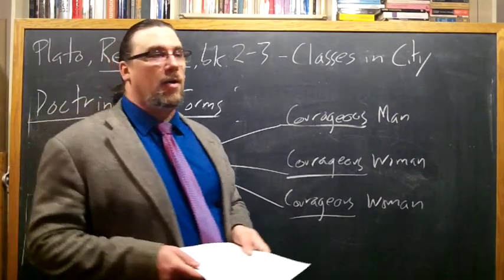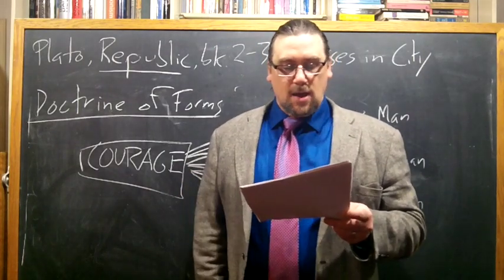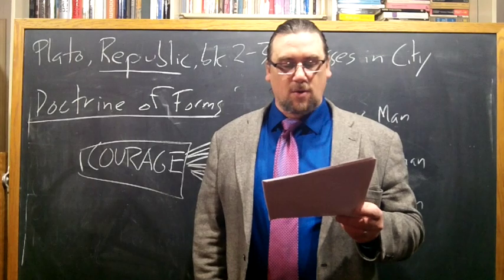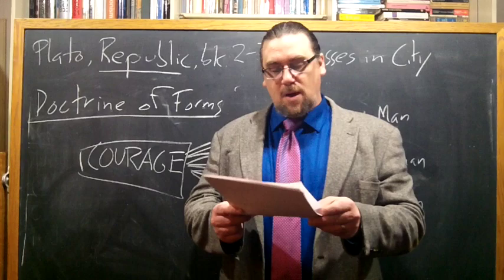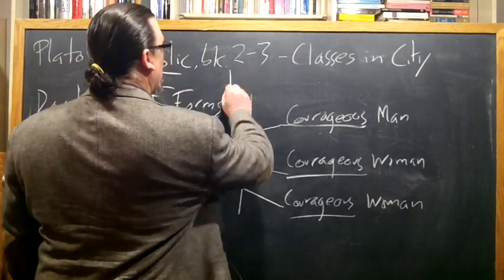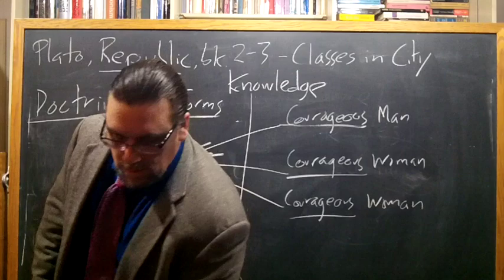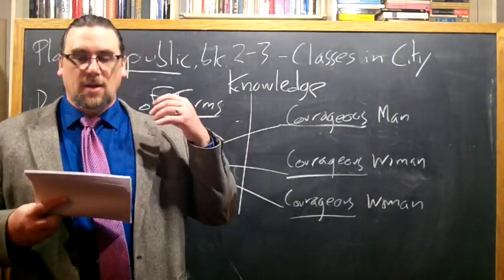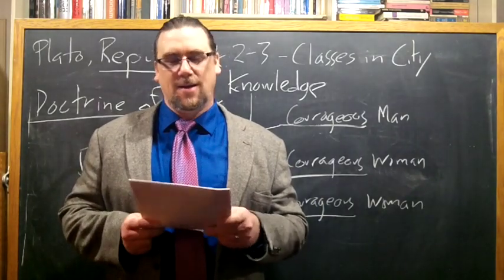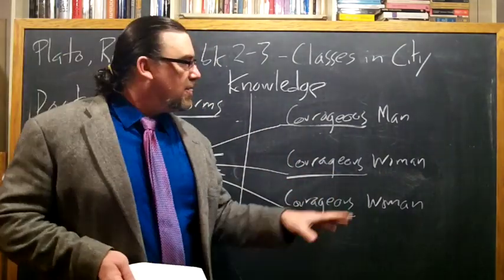And we're able to recognize these as courageous people, as having courage. We're able to make sense of what they have because there is this pattern, as he calls it, this form, this idea in Greek, idea, that we're able to use, that we have some dim recollection of that we can recognize. So he says, let's think about how this works. Just as in learning to read, we were satisfied when we knew the letters of the alphabet in all their sizes and combinations, we were able to make them out as we recognize the reflection of the letters in the water, or in a mirror, only when we know the letters themselves. The same art and study giving us the knowledge of both. Here's a key idea. There's some sort of knowledge that helps us make this identification.